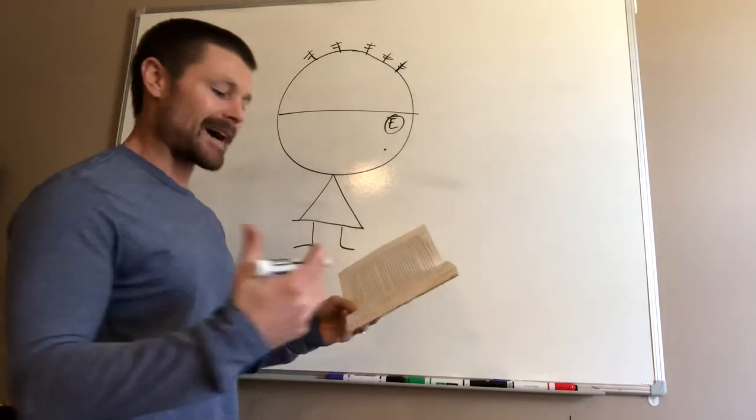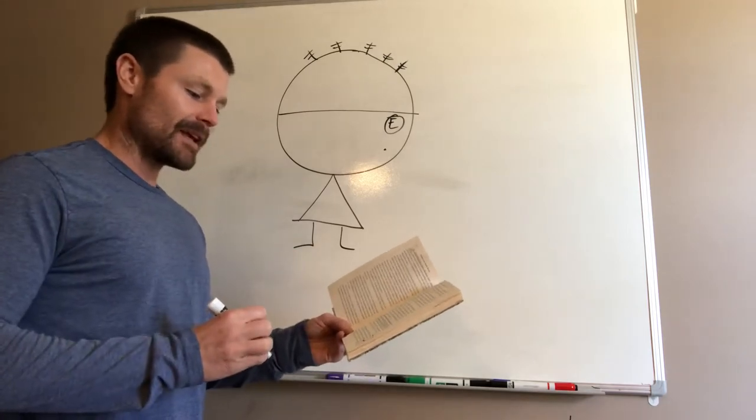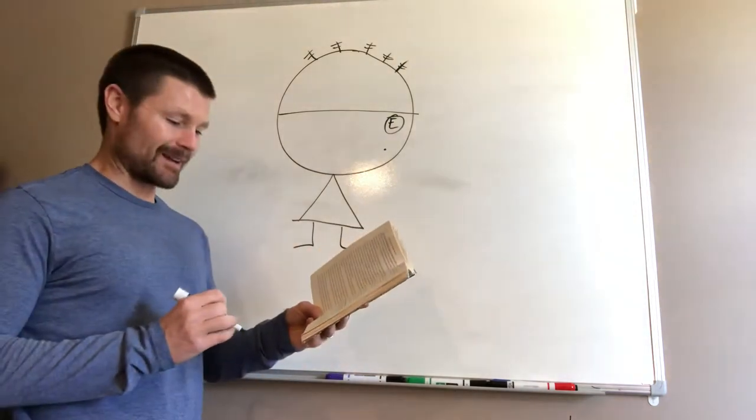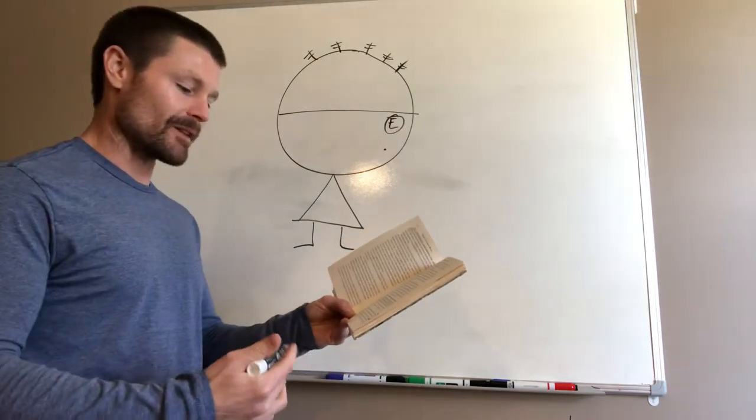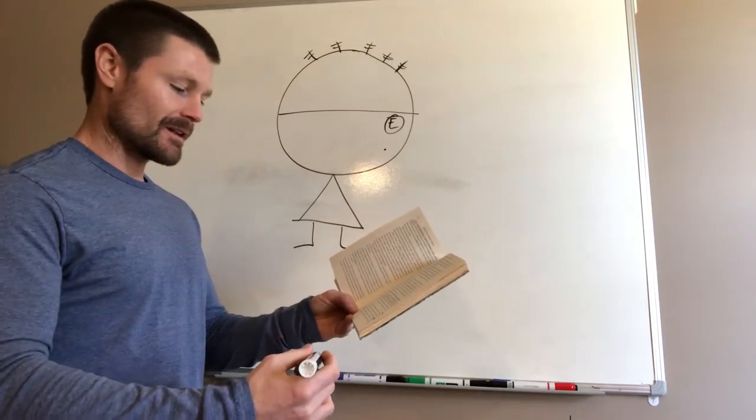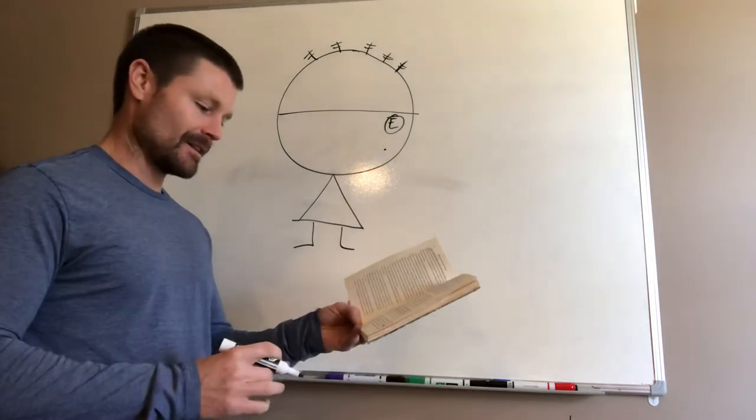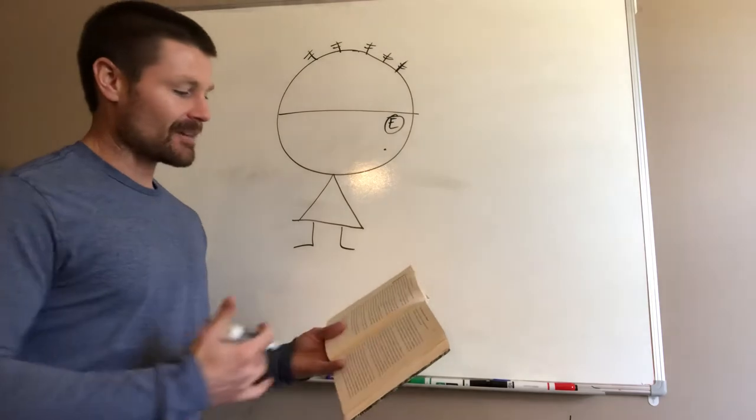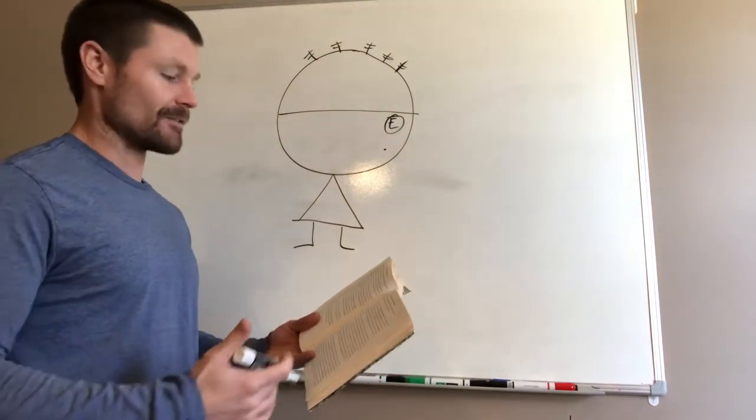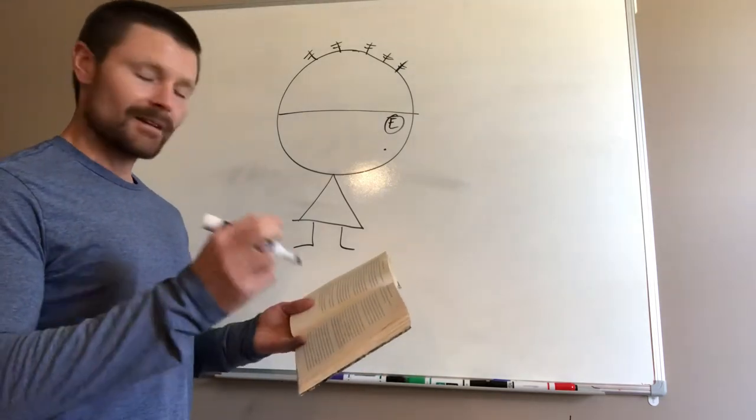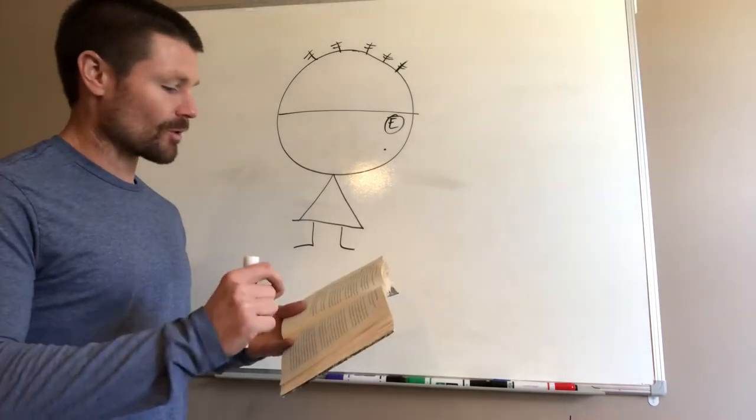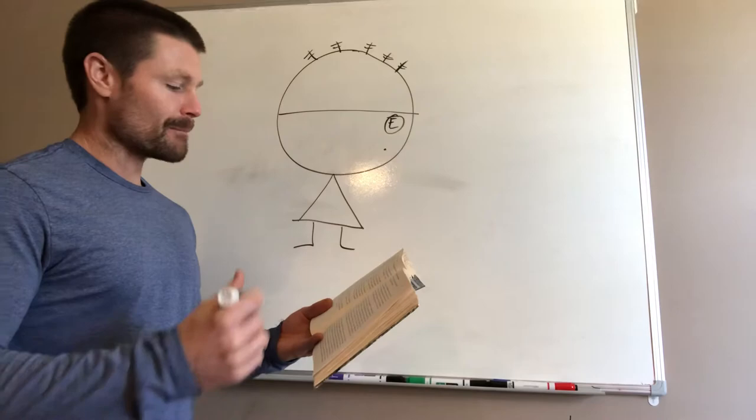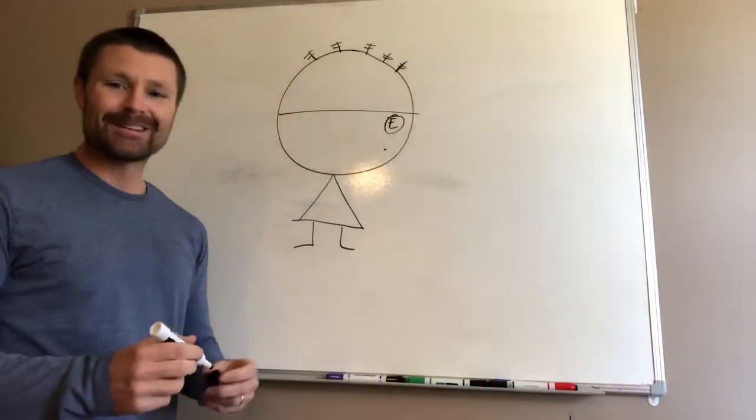Another thing I want to read to you real quick here is: the subconscious mind will not remain idle. If you fail to plant desires in your subconscious mind, it will feed upon the thoughts that reach it as a result of your neglect. For the present, it is sufficient to remember that you are living daily in the midst of all manner of thought impulses that are reaching your subconscious mind without your knowledge. Some of these impulses are negative, some are positive. You're now engaged in trying to help shut off the flow of negative impulses and to aid in the voluntary influencing of your subconscious mind through the positive impulses of your desire. When you achieve this, you will possess the key that unlocks the door to your subconscious mind. Moreover, you will control that door so completely that no undesirable thought may influence your subconscious mind.